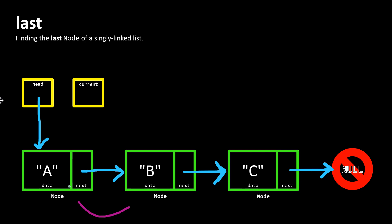We chain these together by saying A, the first node, refers to B, the second node. The second node refers to the C node, and finally the C node refers to null. When the next property of a node is null, it means we've reached the tail of our list.